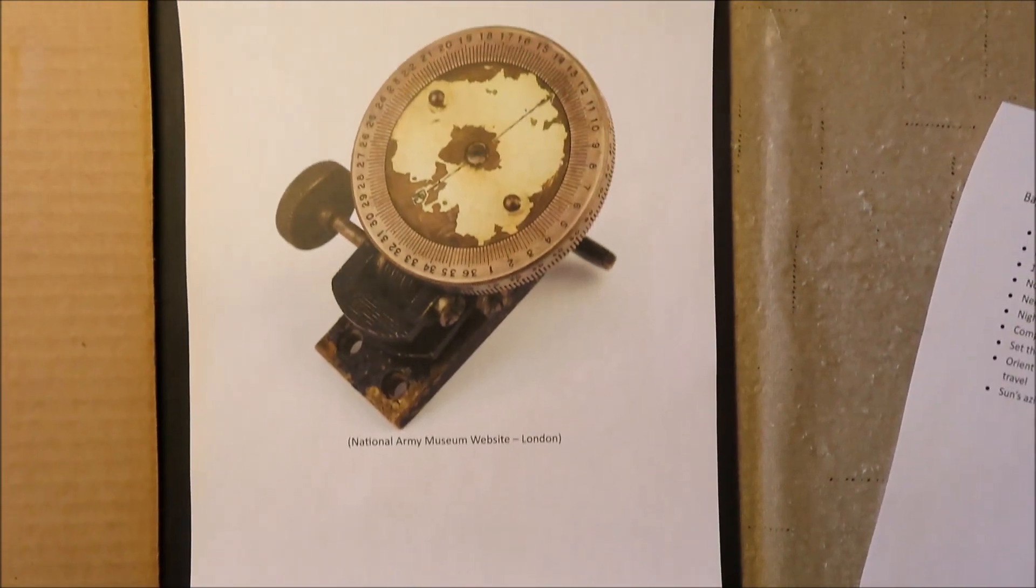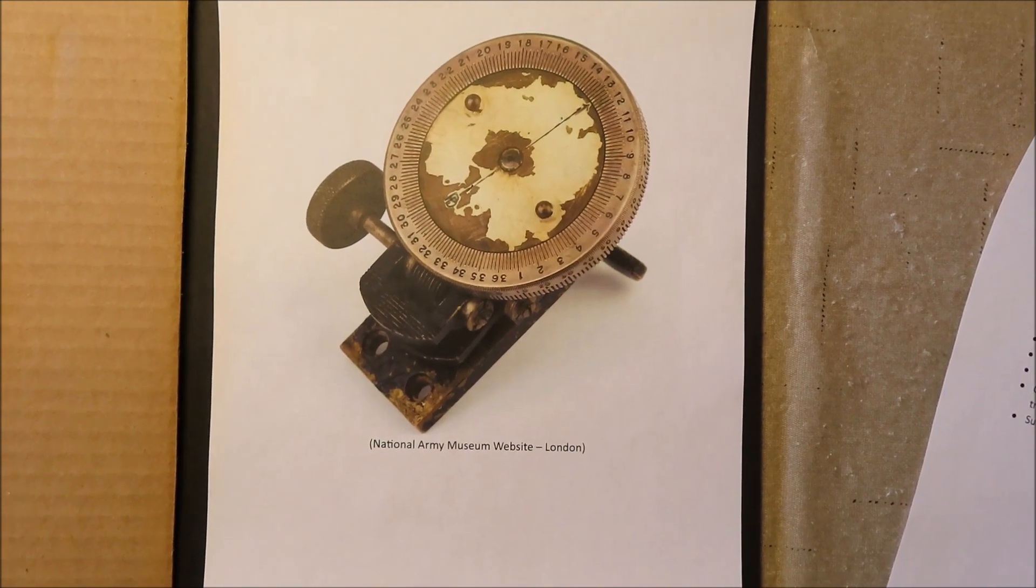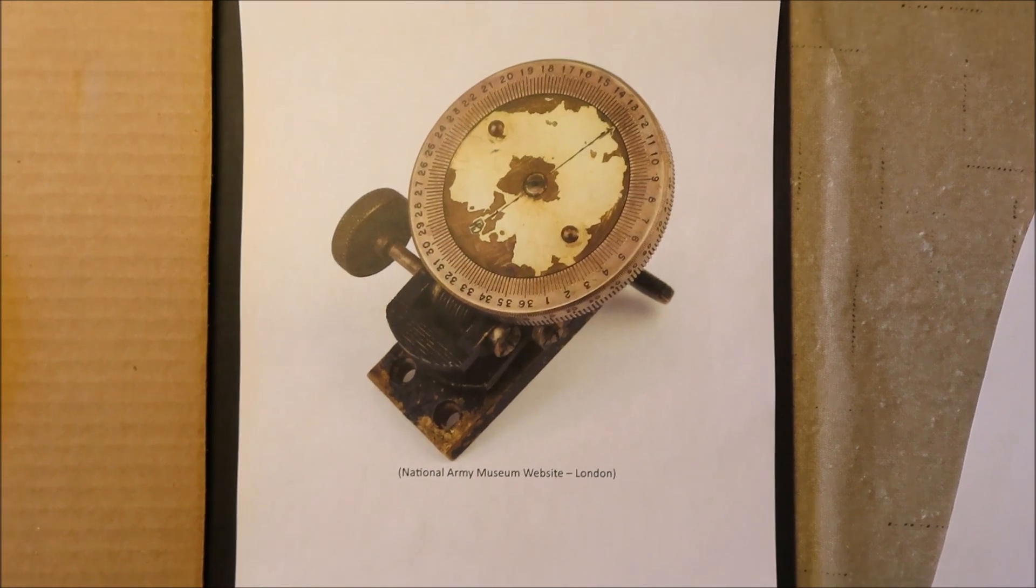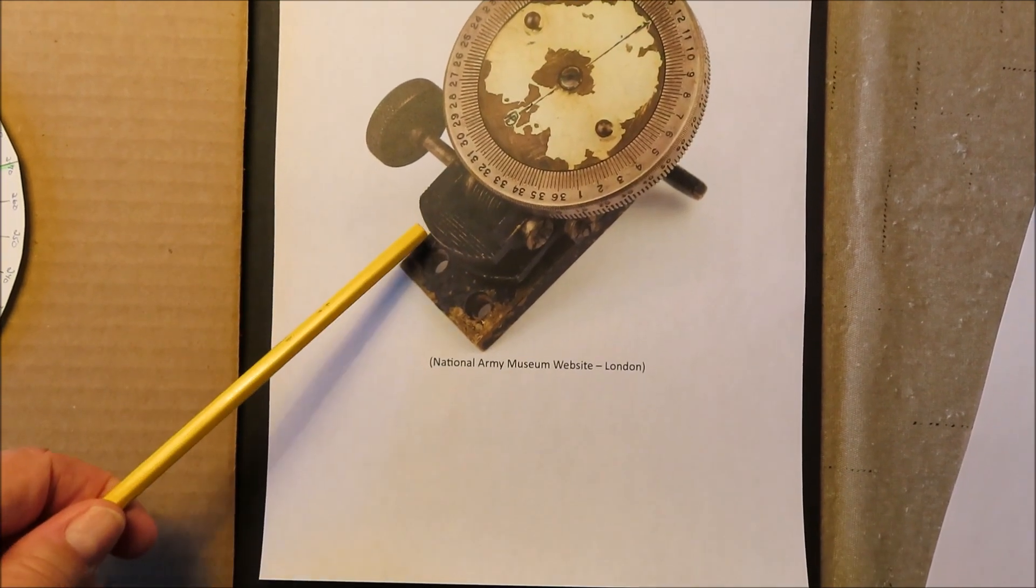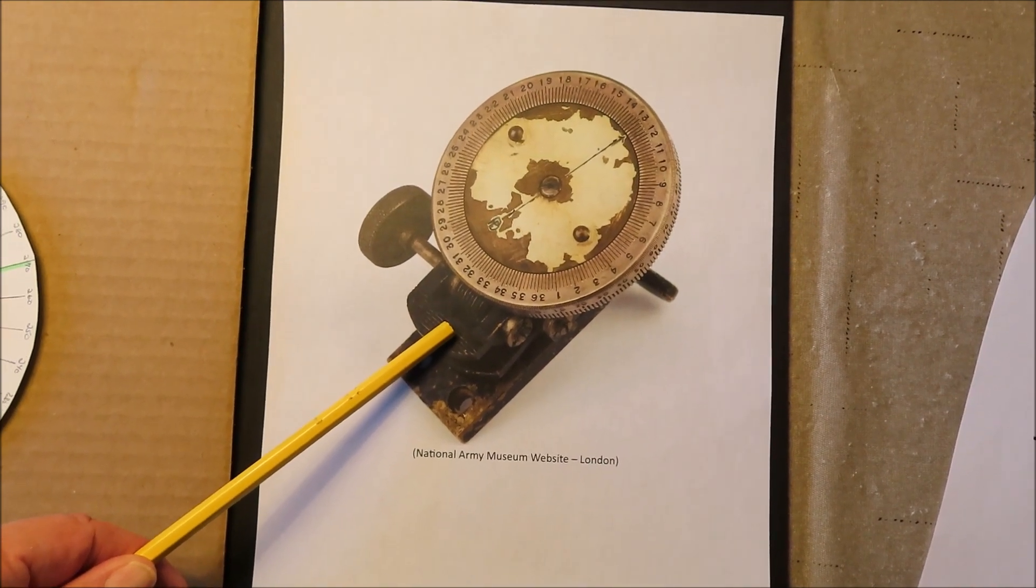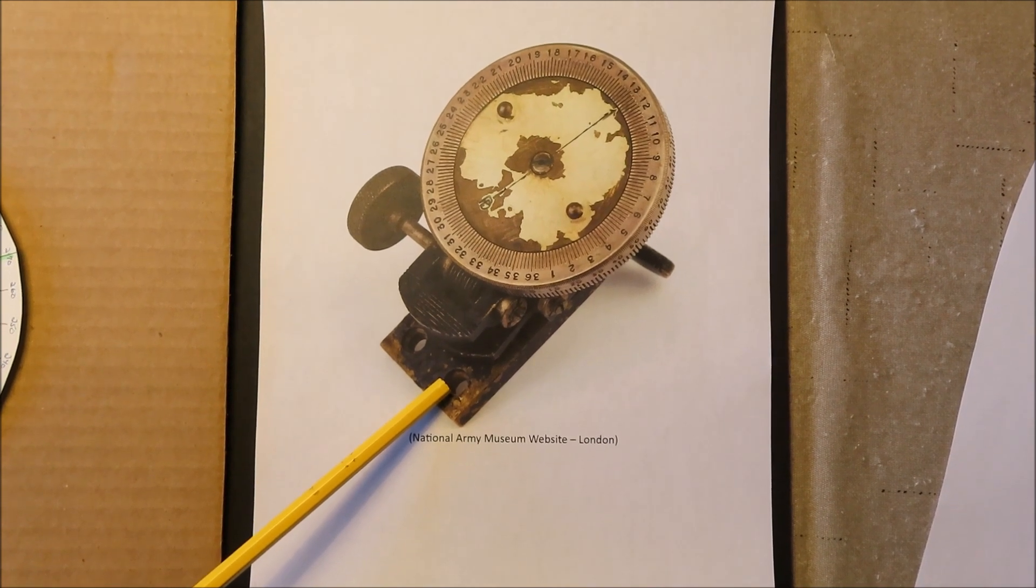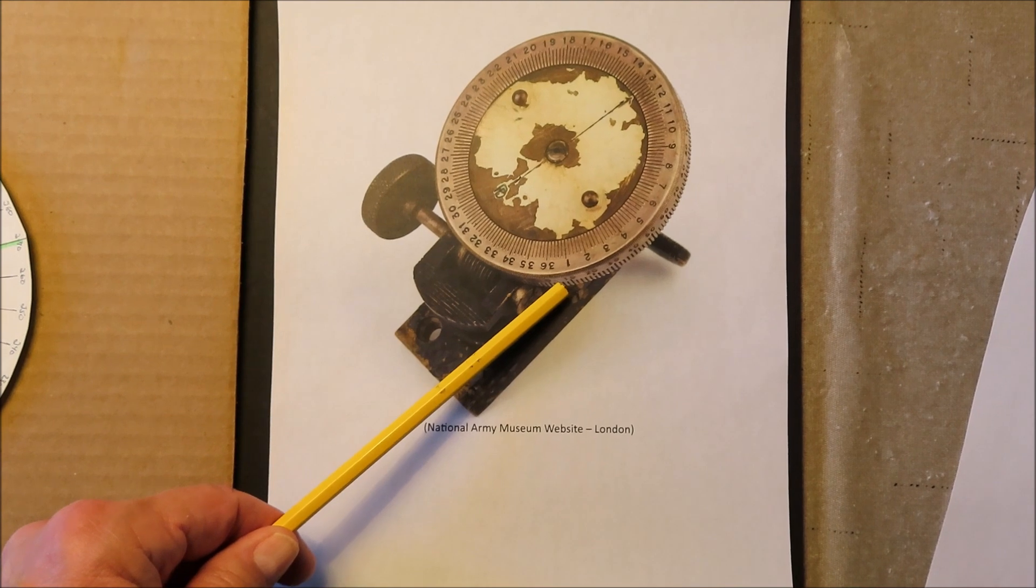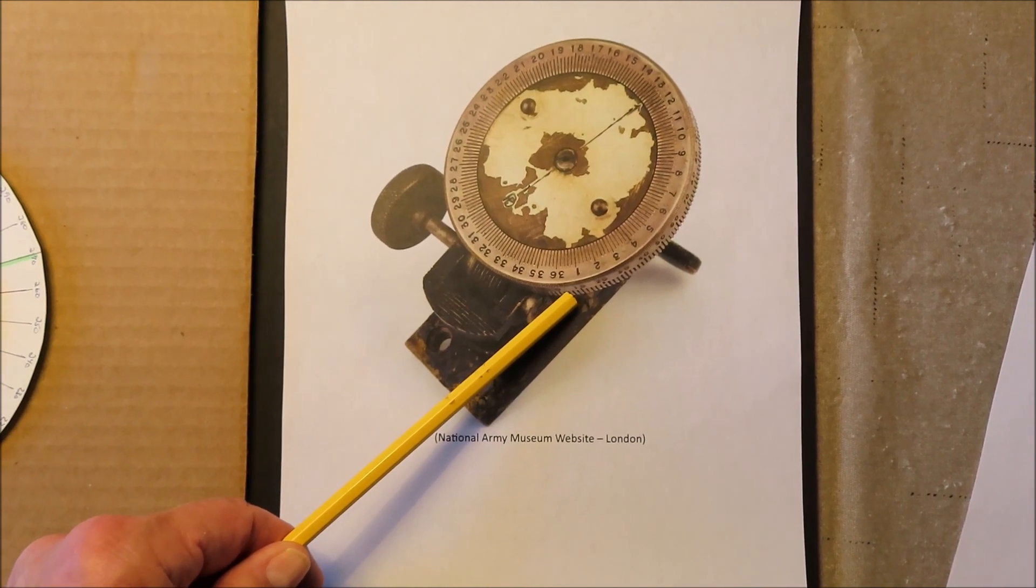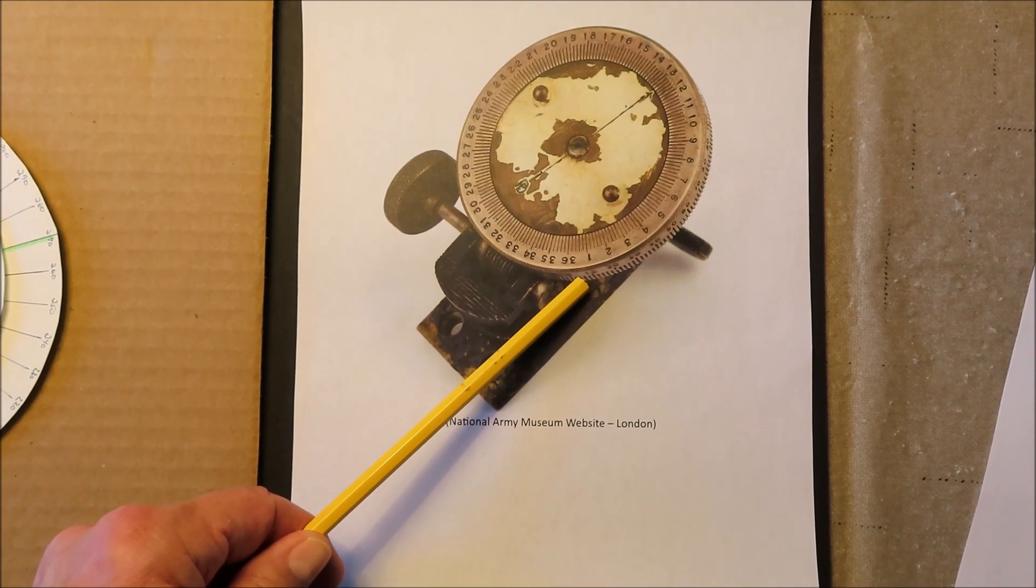This is a picture that I found on the National Army Museum website. That's located in London. There was a couple of different versions of this thing. This one is the one that was designed to be mounted onto the hood of a truck or jeep. And then it has degree markings on the edge, which you set to the azimuth of the sun.